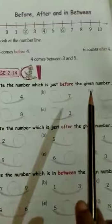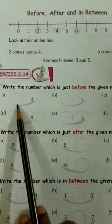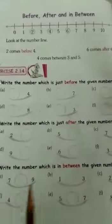Write the number which is just before the given number. Before 4, it will be 3, before 7, it will be 6.